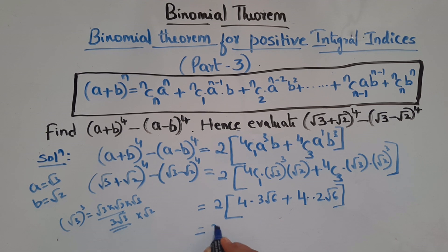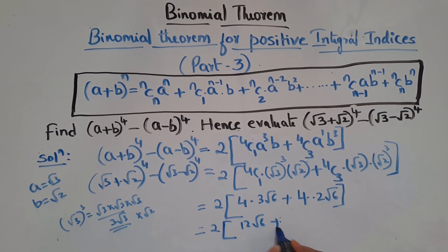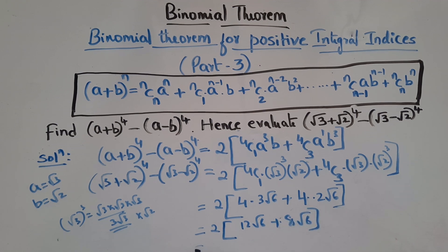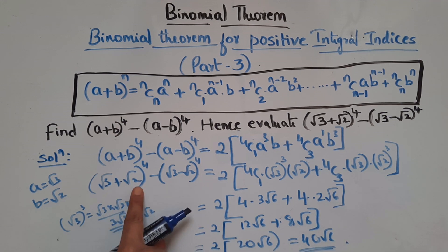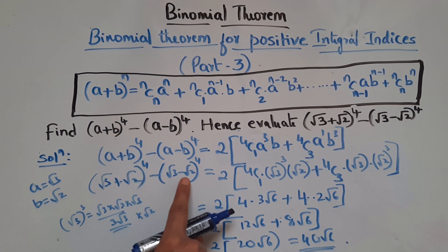So we have 2 × (12√6 + 8√6) = 2 × 20√6 = 40√6. Therefore (√3 + √2)⁴ - (√3 - √2)⁴ = 40√6.